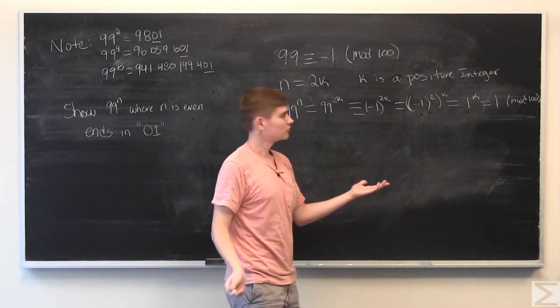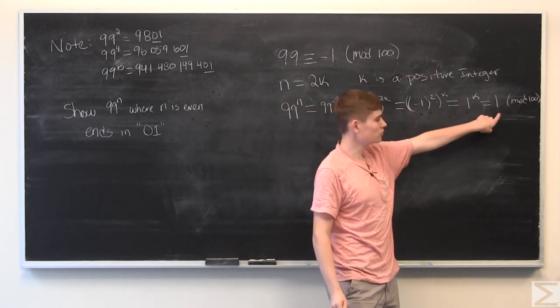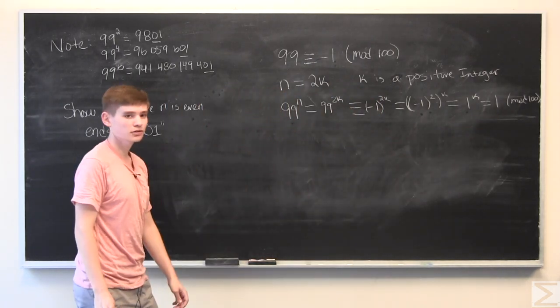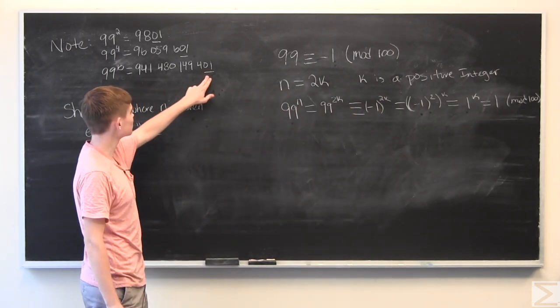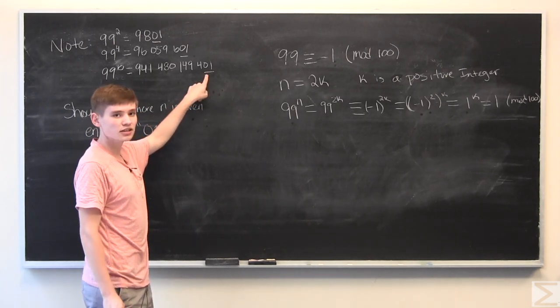So we've shown that if you raise 99 to an even power, it is equivalent to 1 mod 100. And the fact that it's equivalent to 1 mod 100 means that the last number will be a 1 and the second to last number will be a 0.